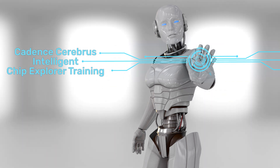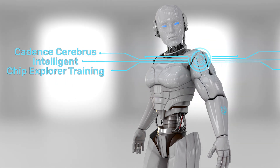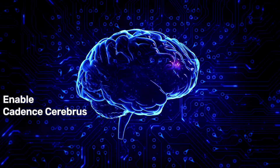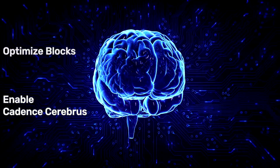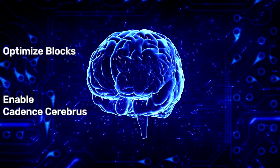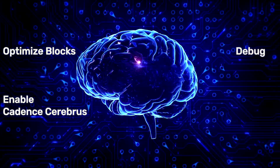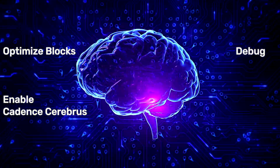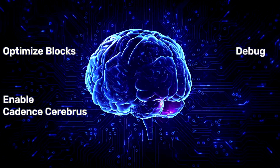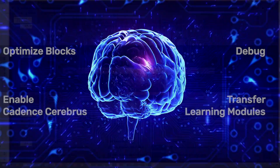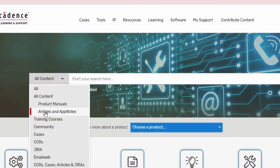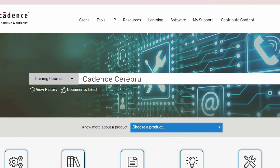Eight hours of Cadence Cerebrus Intelligent Chip Explorer training, and you'll know all about enabling Cadence Cerebrus on your existing flow with minor modifications, optimizing blocks for PPA, debugging and analyzing your design for improved efficiency and faster design closure, and transferring learning modules to save runtime. The course contains seven modules and is available on Cadence Learning and Support 24/7.